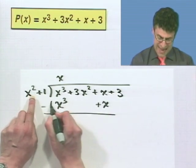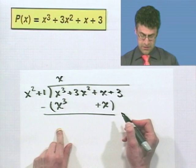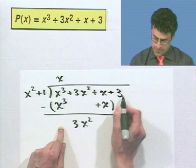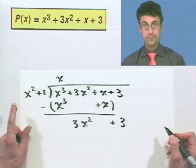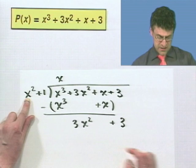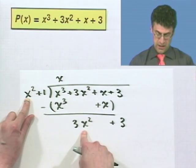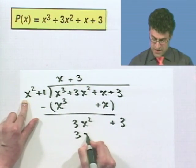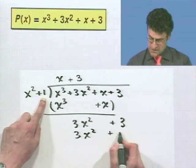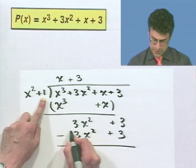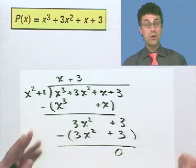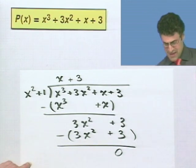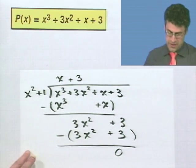And then I subtract everything. x cubed minus x cubed is 0. x minus x is 0. But I am left with this 3x squared, and then I bring down this term here, plus 3. What do I have to multiply x squared by to make it equal to 3x squared? Well, I have to tack on a plus 3. 3 times x squared is 3x squared, and 3 times 1 is 3. And check it out. When I subtract, everything cancels. I'm left with 0. It goes in evenly, which, of course, we knew by this theorem. And so what that means is we now know how to factor this bad boy.